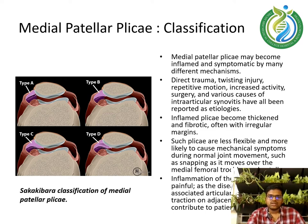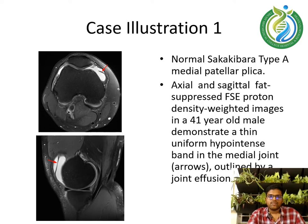The Sakakibara classification of medial patellar plicae is shown: type A, type B, type C, and type D. Case illustration 1 demonstrates a normal Sakakibara type A medial patellar plicae. Axial and sagittal fat-suppressed FSE proton density weighted images in a 41-year-old male demonstrate a thin, uniform hypointense band in the medial joint outlined by a joint effusion.